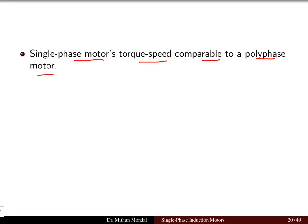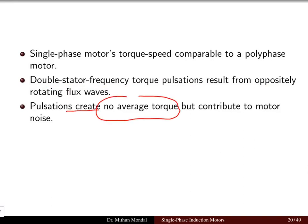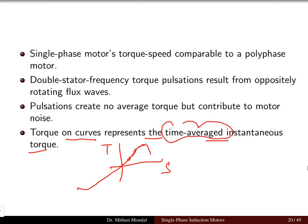Double stator-frequency torque pulsations result from the oppositely rotating flux waves. These pulsations create no average torque — it is only the rotating flux that creates torque. The pulsations contribute only to motor noise. The torque-on curves represent the time-average instantaneous torque, because torque is also a function of time depending upon the load.